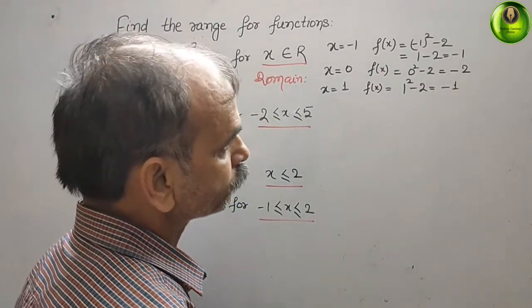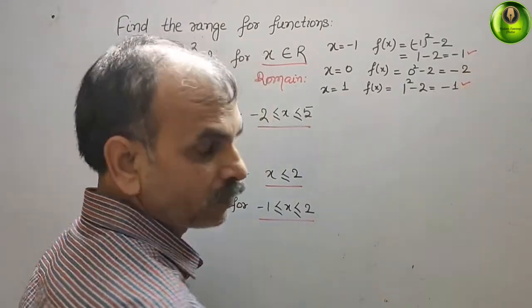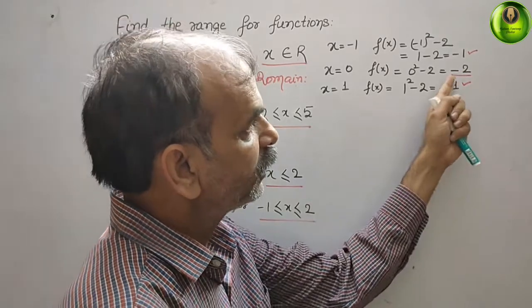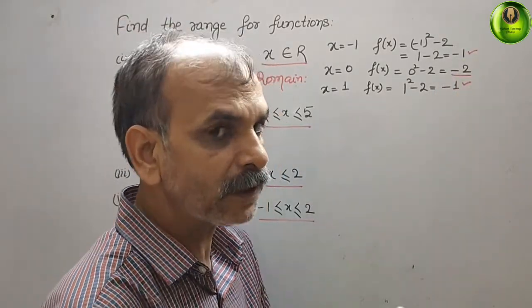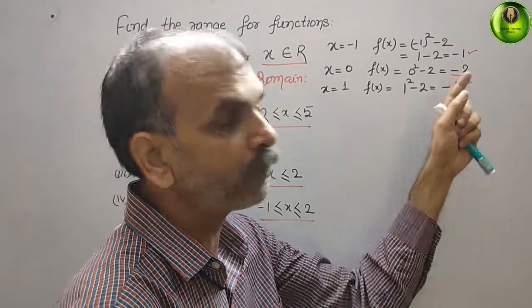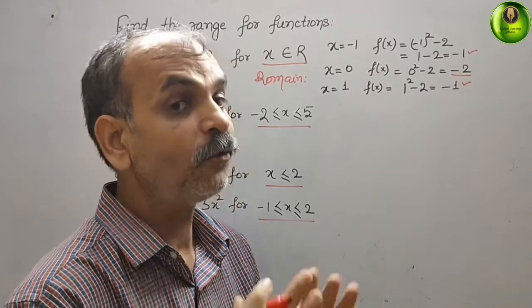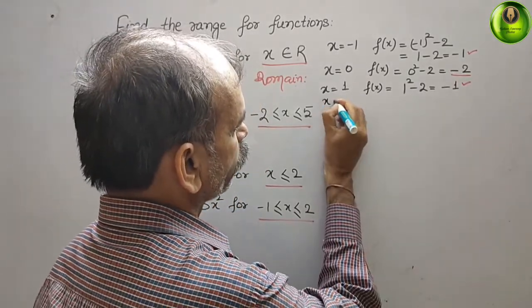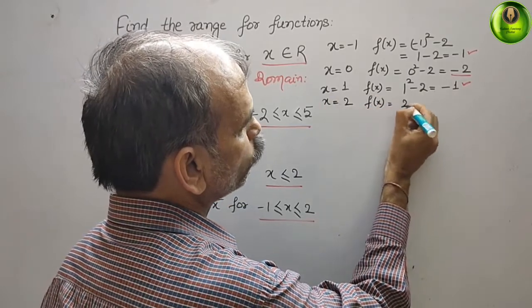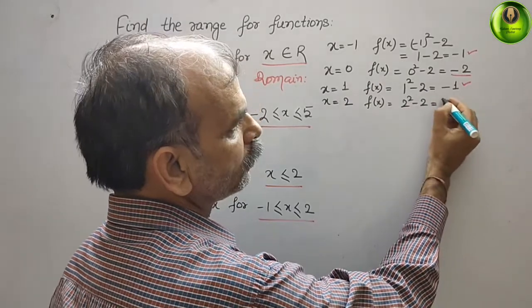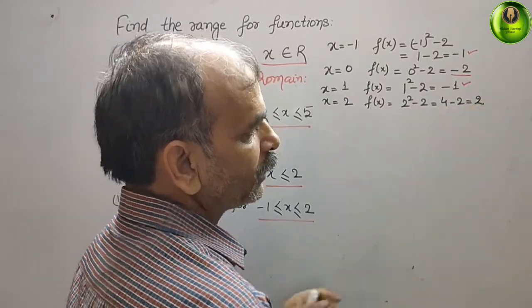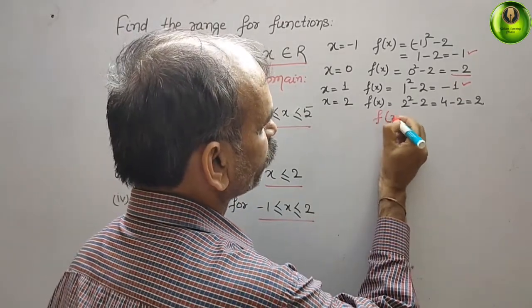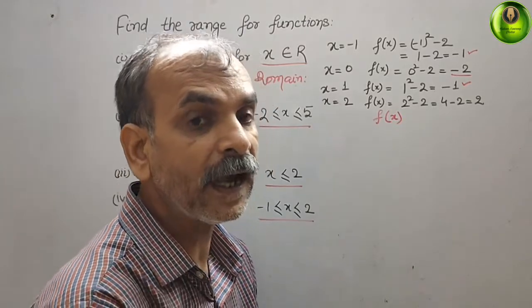Now if you see, for x = -1 we get -1, for x = 0 we get -2, and for x = 1 we get -1. If you put x = 2: f(x) = 2² - 2 = 4 - 2 = 2, which is also greater than -2. So the x values always give a result greater than or equal to -2. Therefore the range is f(x) ≥ -2.